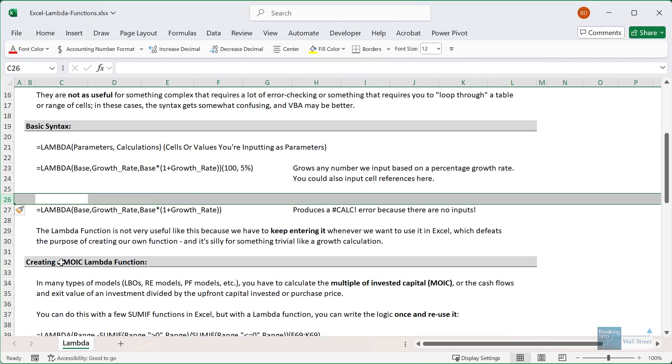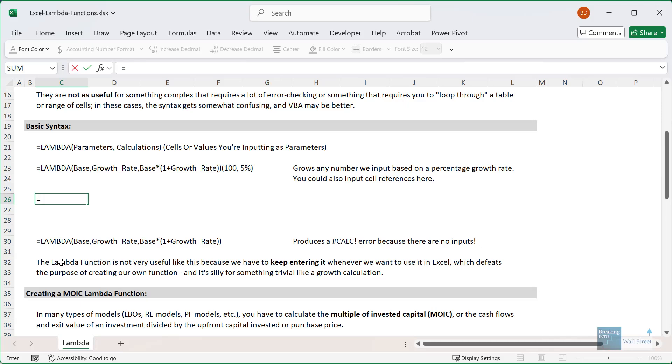You can see the function right up here. If I enter equals Lambda, and then I say base, so our baseline number, and then our growth rate. So we're assuming here that the person is entering the base number, then the growth rate, so maybe 100, and then 5% for the growth rate, we're going to take this base and then multiply by one plus the growth rate.